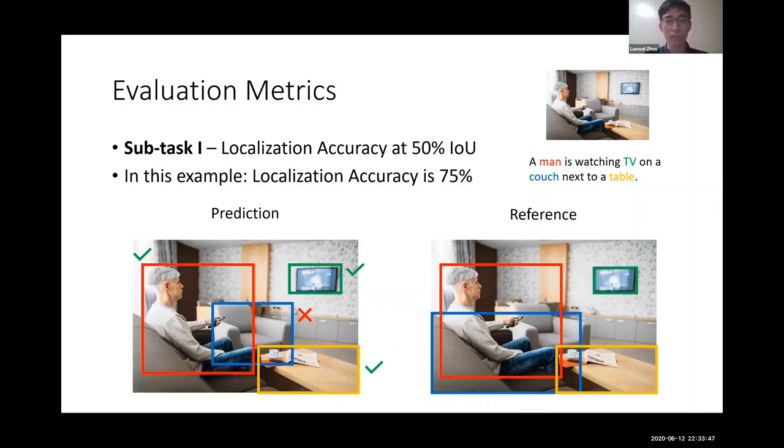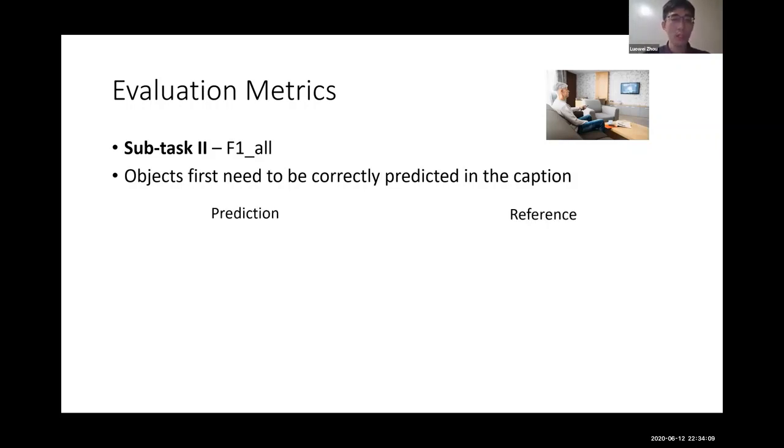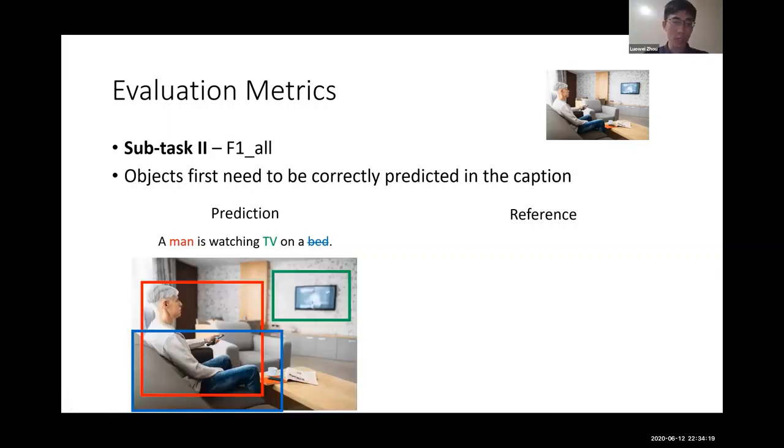And for subtask 2, we use a metric called F1-OR. So in this case, we need to first generate a caption. And in the caption, only the word objects that are correctly predicted will move on to the grounding object localization evaluation. So again, the prediction and the reference. So say in the prediction, the model output a man is watching TV on a bat. And the corresponding boxes look like this. In the reference, we have a man is watching TV on a couch, next to the table, and the bounding boxes.